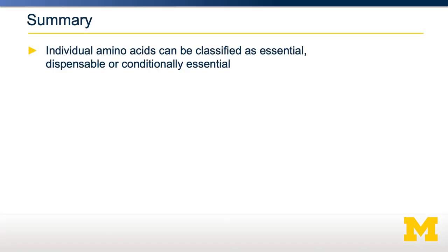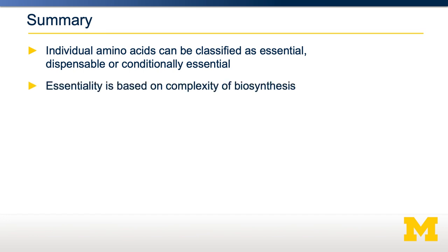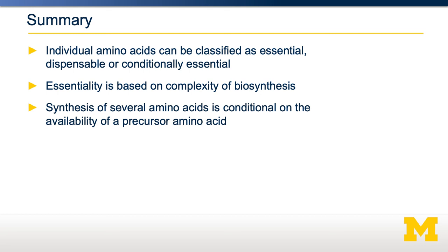In summary, each of the 20 amino acids can be classified as essential, dispensable, or conditionally essential, based on the complexity of their biosynthesis. More complicated biosynthesis generally makes an amino acid essential, as we've evolved not to bother with that complicated biochemistry. The synthesis of any amino acid is conditional on the availability of a precursor amino acid and the enzyme to convert it. Individual amino acids have different DRIs — nine DRIs for nine essential amino acids in adults. We don't have DRIs for dispensable or conditionally essential amino acids because we can generally make those ourselves. It's become common to supplement with individual amino acids like leucine, arginine, or lysine. Understanding this biochemistry helps us understand how supplements may work and what might happen if someone were deficient in a particular biosynthetic or catabolic pathway.